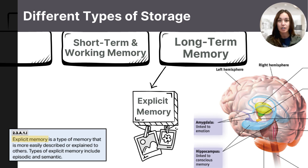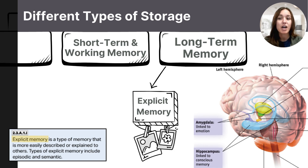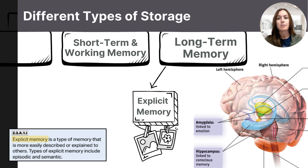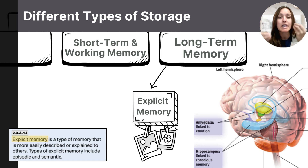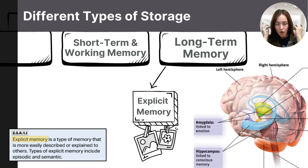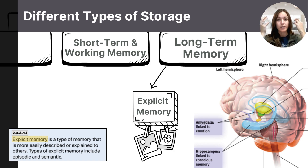When you ask someone to share about a memory they have, they're likely going to share an explicit memory — referring to information you are consciously aware of and consciously drawing out. These are the memories you have for facts, knowledge, and experiences, and they're stored in your hippocampus. When you summon stored explicit memories, that information is pulled from your hippocampus into your working memory to be processed in your prefrontal cortex. Visual memories tend to be processed on the right side, while verbal memories like recalling a password tend to be processed on the left side.